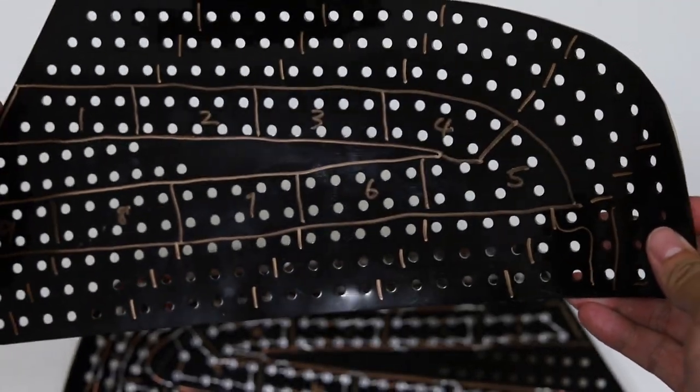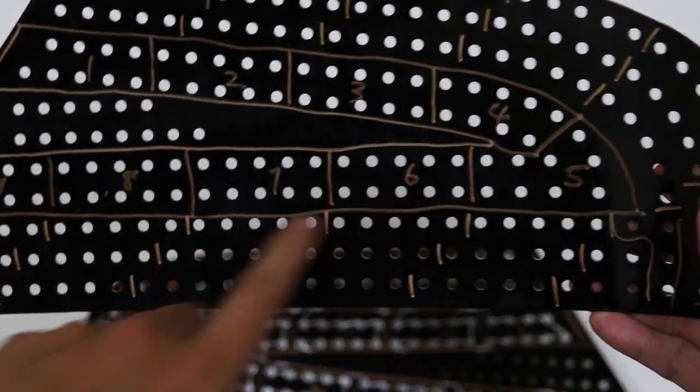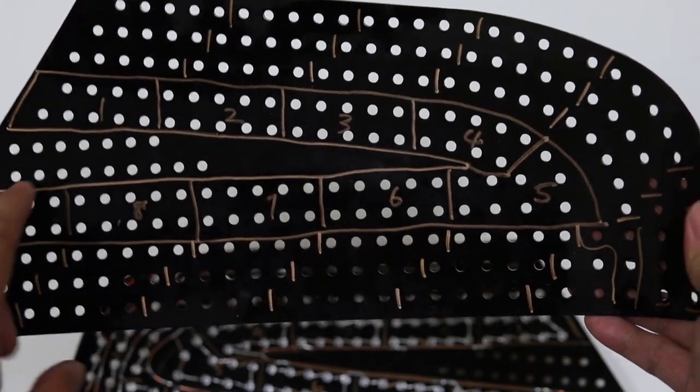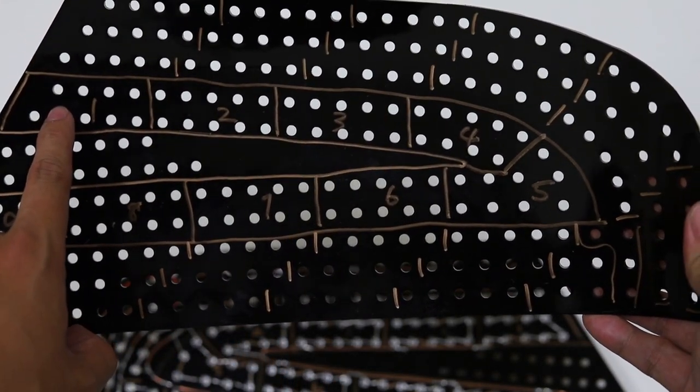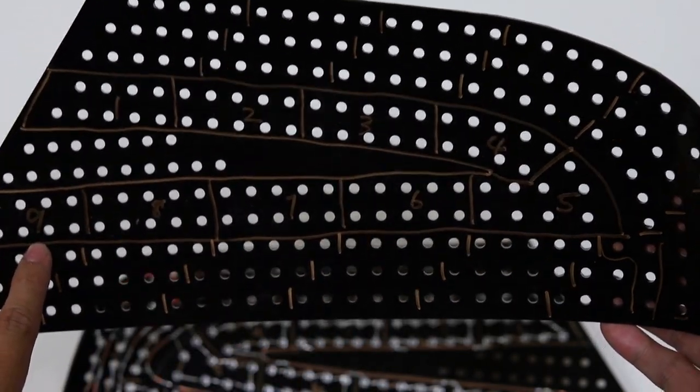Before you start wiring your sequential turn signal, you want to mark out your groupings. On this particular set of tail lights, we have 9 pixels, and since I want the animation to start from here, I numbered them 1 through 9 in the sequence that I want.